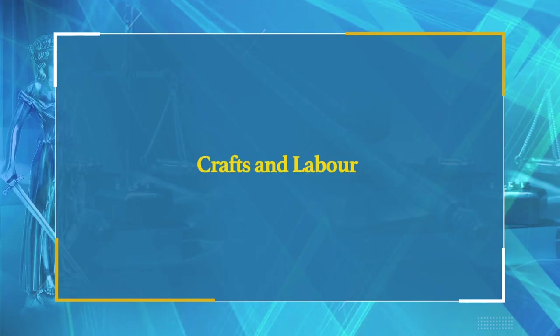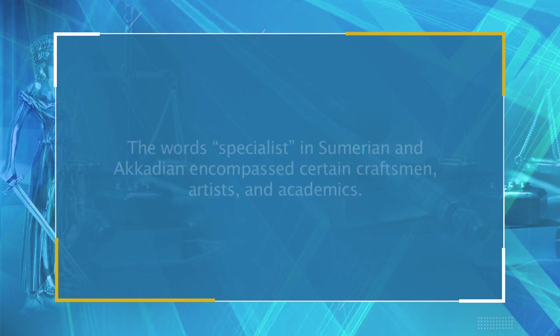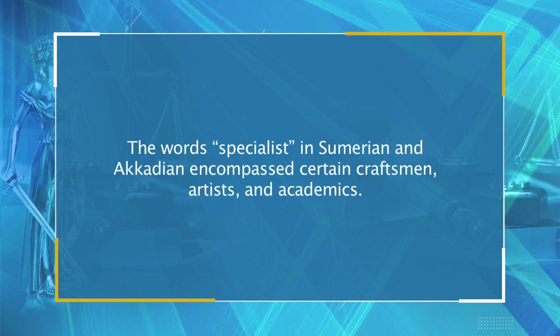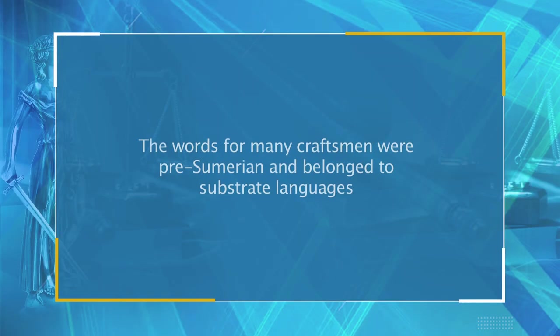Now talking about craftsmen and labour: the words for 'specialist' in Sumerian and Akkadian encompassed certain craftsmen, artists and academics — individuals with specialised knowledge or abilities. The words for many craftsmen were pre-Sumerian and belonged to substrate languages. Knowledge of the craftsmen was learned by different methods including oral teaching, apprenticeship, and writing in case of the scribes. Crafts were regularly passed within families or clans. Training was very long — as much as eight years for a house builder and four for a seal cutter. Sometimes craftsmen were slaves, but only wealthy families could afford to have skilled slaves.